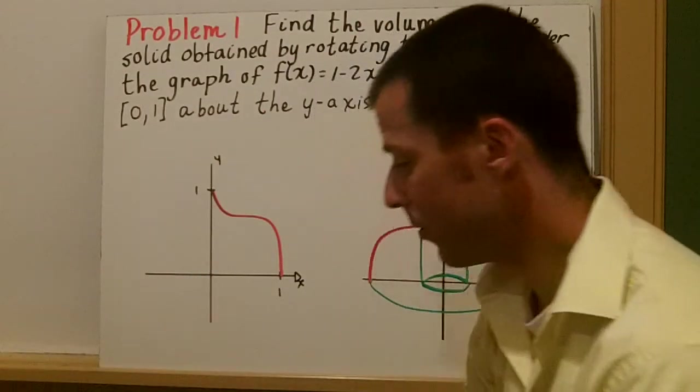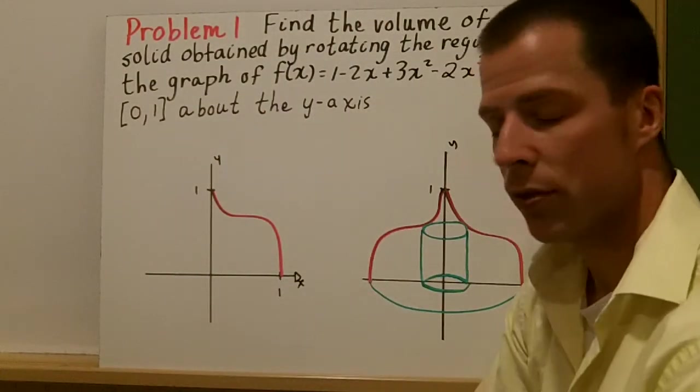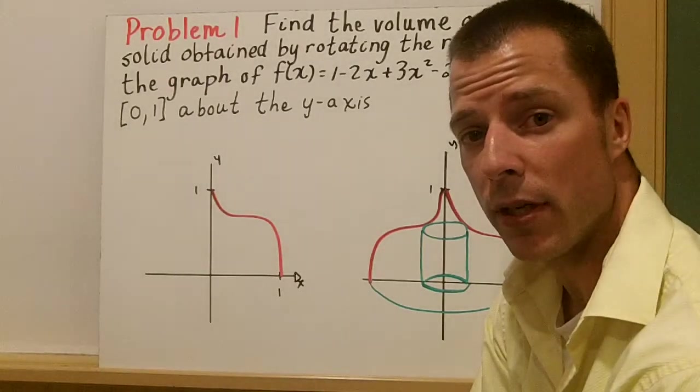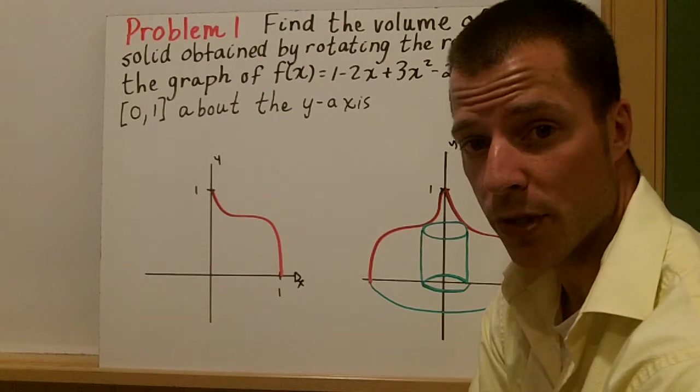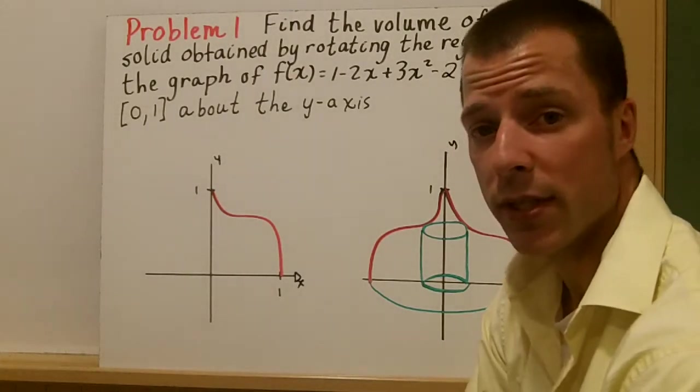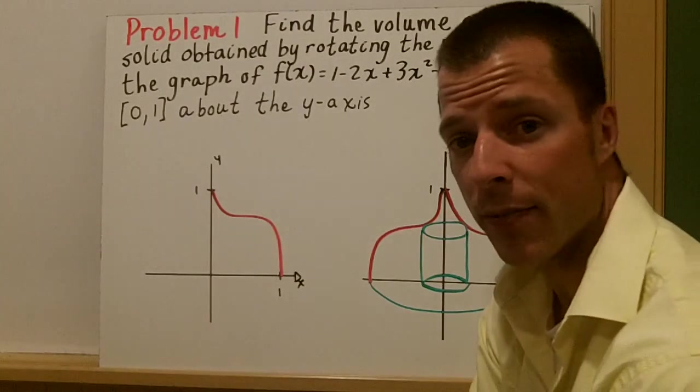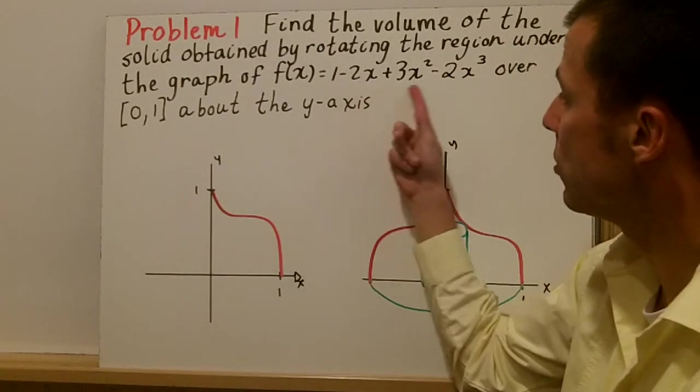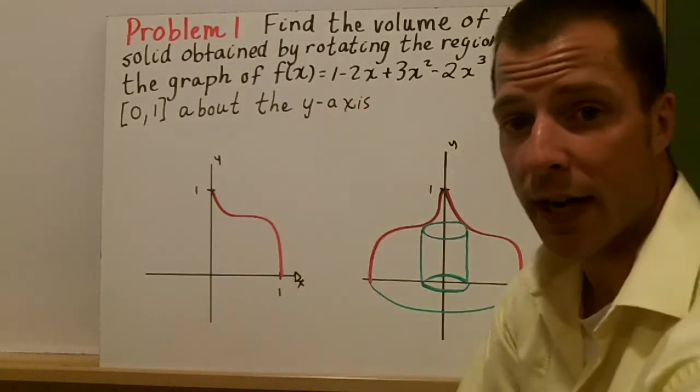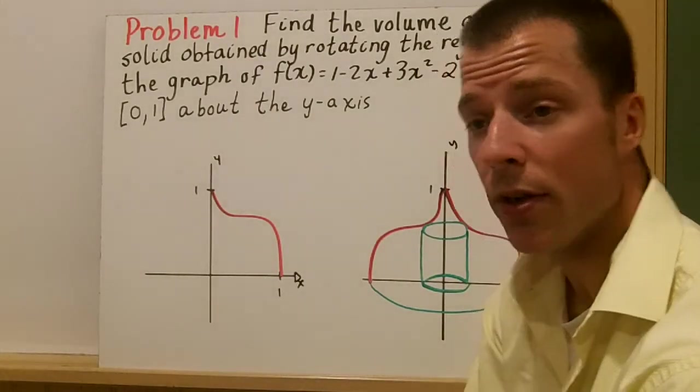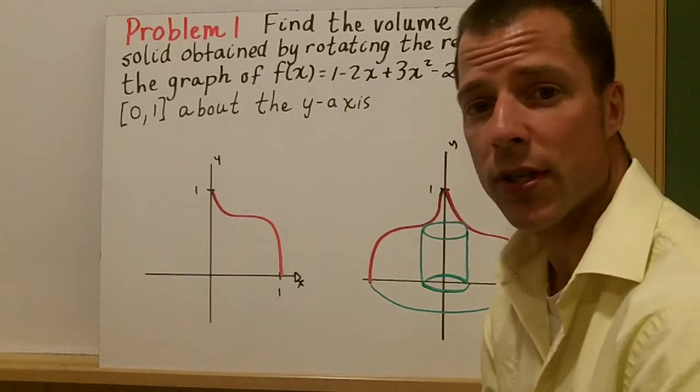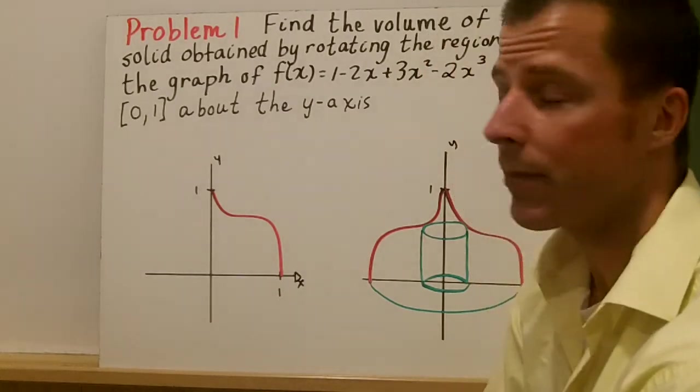What happens in example one and with cylindrical shells is that we're really going to be rotating around the y-axis and actually integrating with respect to x. It gets really tough to use the disk method in this type of example because then we would have to take this equation here, f(x), and find the inverse, which of a third degree can be very difficult. This is one of the reasons why we use the cylindrical shell in some cases.